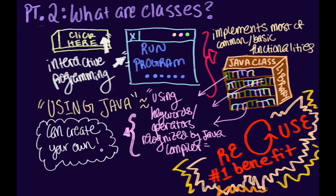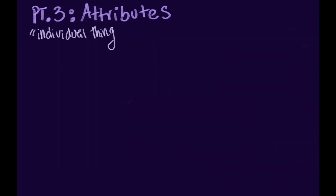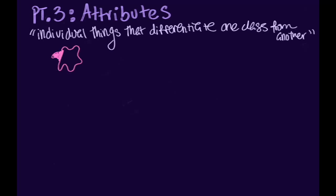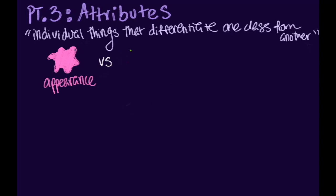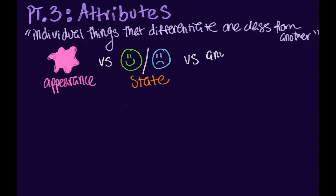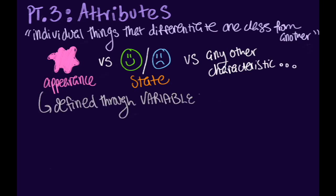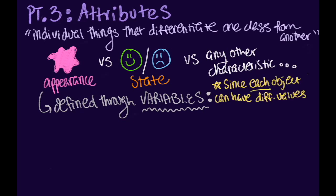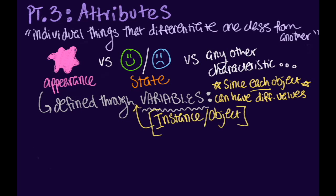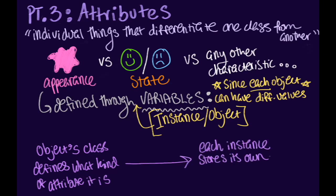Generally, every class you write in Java is made of two components. The first are our attributes. Attributes are the individual things that differentiate one class of an object from another and determine the appearance, state, and other qualities of that class — think the car brand, car color, car features, and car acceleration. Within our classes, these attributes are defined using variables. But since each object can have a different value for its variables, we call these specialized values instance or object variables. Therefore, the object's class defines what kind of attribute it is, but each instance stores its own value for that attribute.